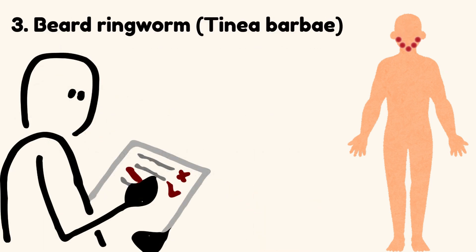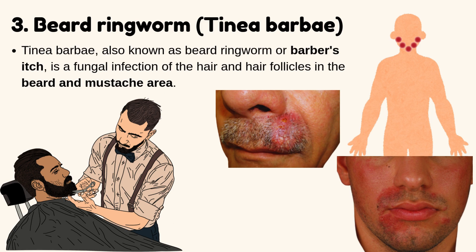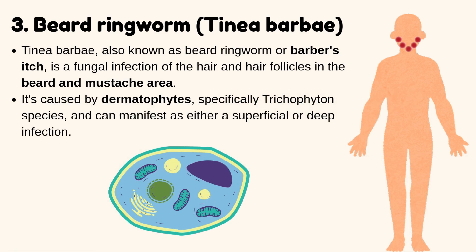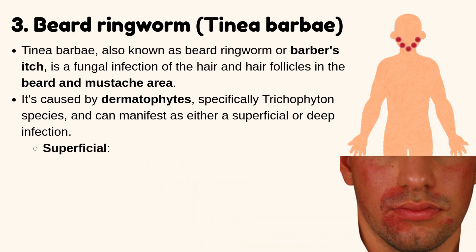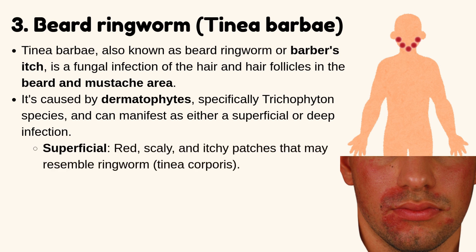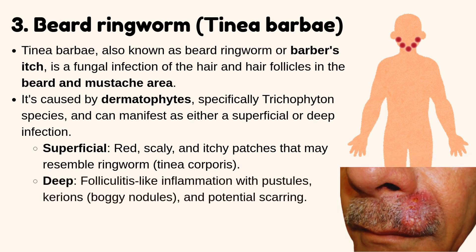Beard ringworm — Tinea barbae. Tinea barbae, also known as beard ringworm or barber's itch, is a fungal infection of the hair and hair follicles in the beard and mustache area. It is caused by dermatophytes, specifically Trichophyton species, and can manifest as either a superficial or deep infection. Superficial infection presents as red, scaly, and itchy patches that may resemble ringworm (tinea corporis). Deep infection presents as folliculitis-like inflammation with pustules, kerions, boggy nodules, and potential scarring.